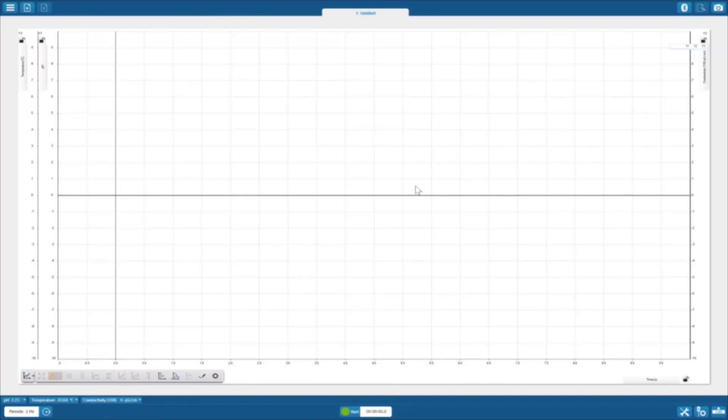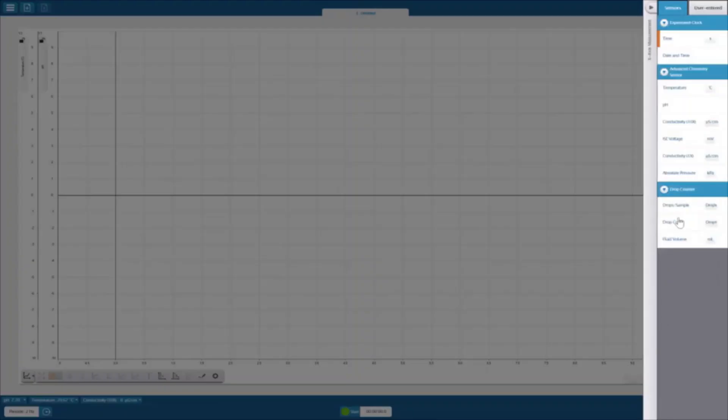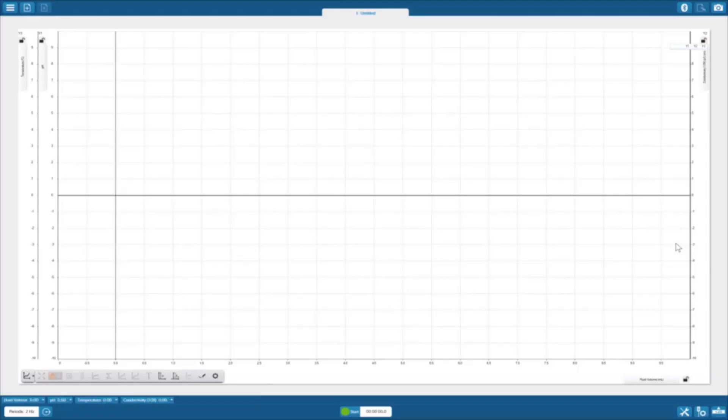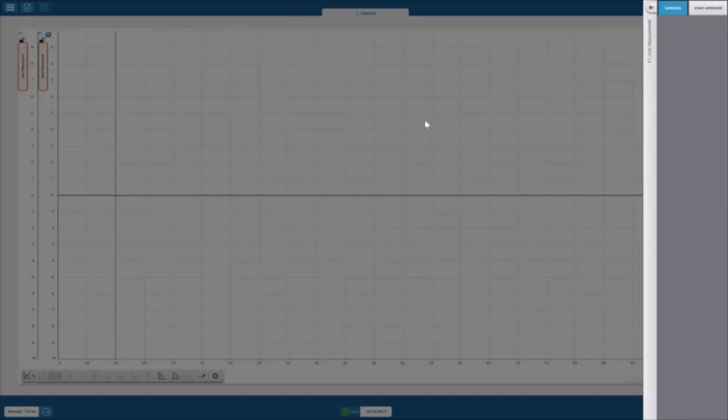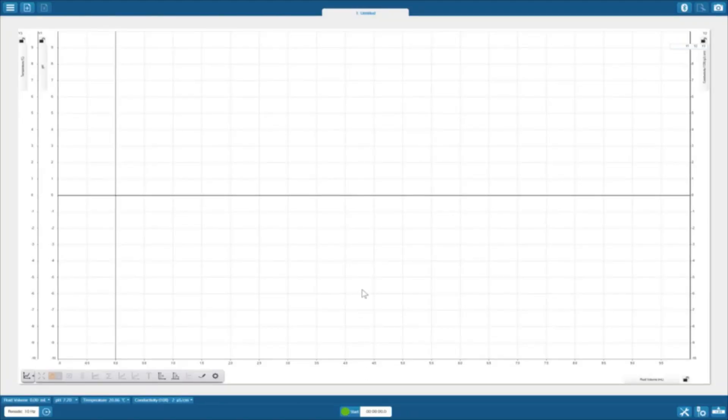Unlike graphs we've created before, we will be measuring our data in terms of the volume added to our solution rather than time. Click the button under the x-axis that says time and change it to fluid volume in milliliters. If your Spark View program isn't allowing you to change any of your axes to these settings, it may be because your sensors are not plugged in or connected to the sparklink air unit.